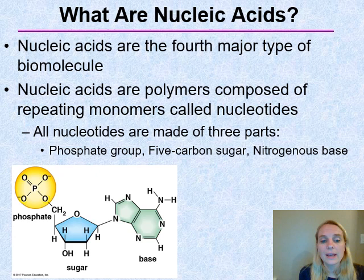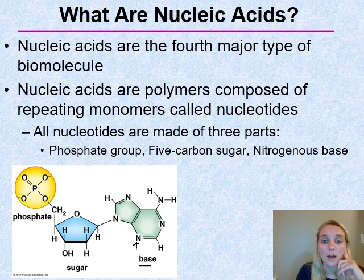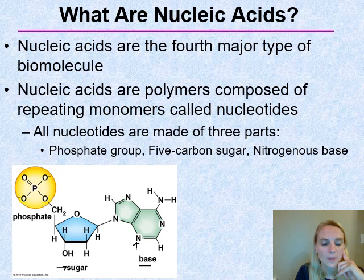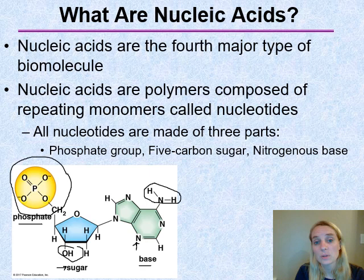Onto our last macromolecule: nucleic acids. Nucleic acids are polymers made up of individual monomers called nucleotides. A nucleotide has three major parts: a nitrogenous base (containing lots of nitrogens), a sugar — either ribose if you're going to make RNA or deoxyribose if you're making DNA — and a phosphate group. We can see several functional groups in nucleotides: an amine group, a hydroxyl group, and the big phosphate group. We're seeing those same functional groups showing up in all types of macromolecules.